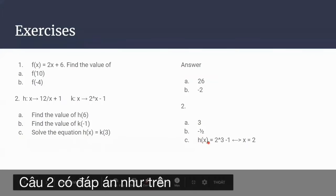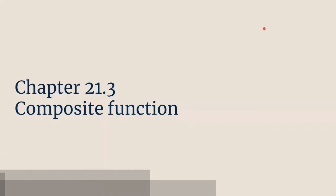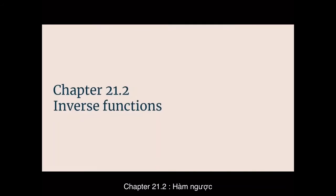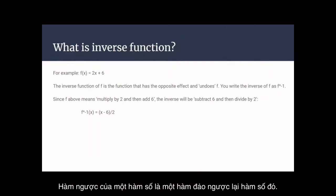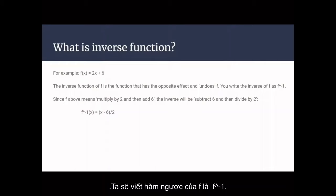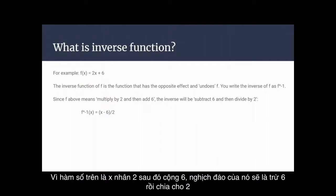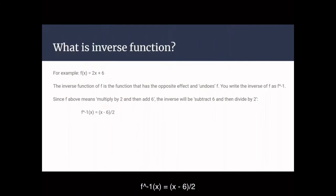2c is h(x) equals 2 to the power of 3 minus 1, so x will be 2. In chapter 21.2, we'll talk about inverse functions. For example, we have f(x) equals 2x plus 6. The inverse function of f is the function that has the opposite effect and undoes f. We write the inverse of f as f to the power of minus 1. Since f means multiply by 2 and then add 6, the inverse will be subtract 6 and then divide by 2, giving the inverse function f⁻¹(x) equals x minus 6 divided by 2.